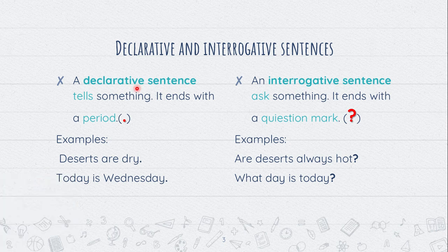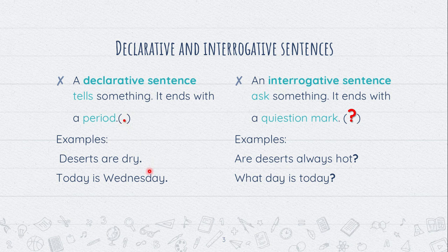A declarative sentence tells something. It ends with a period. Examples: Deserts are dry. Today is Wednesday. My name is Anna.